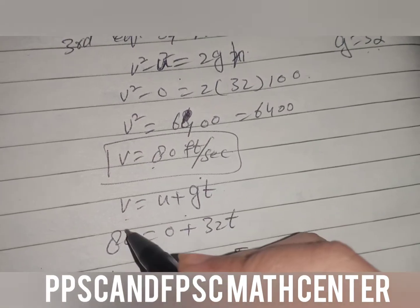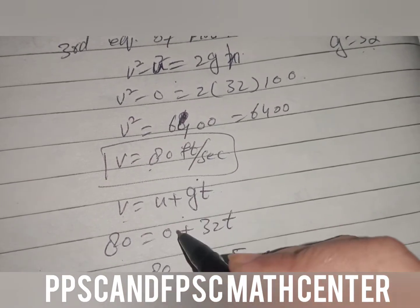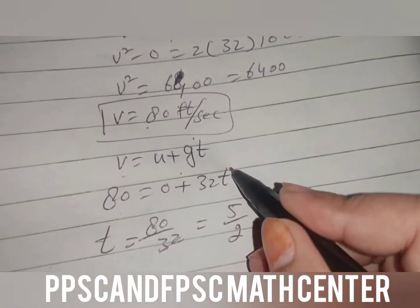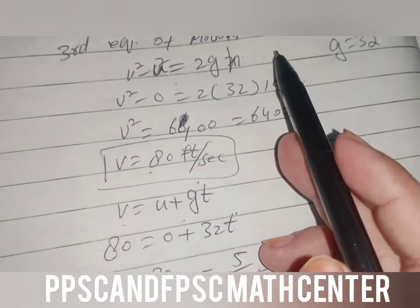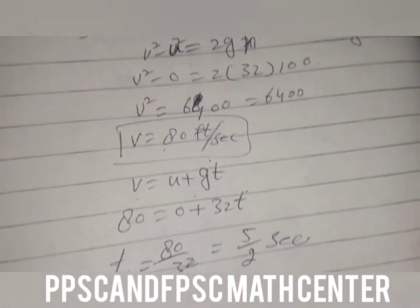Now we use v = u + gt. v is 80, u is 0, g is 32.